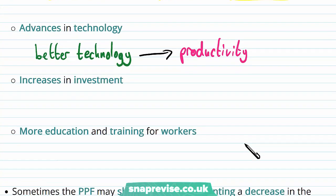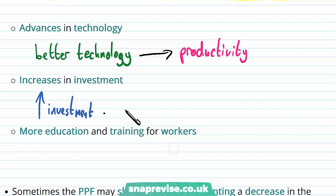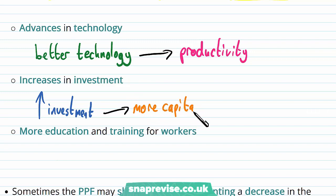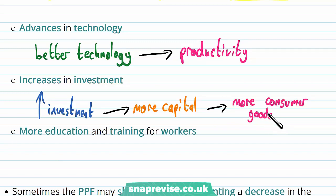Let's think about an increase in investment as a form of shifting the PPF curve. If we increase investment, this will lead to more capital in our economy. When we have more capital, we are able to produce more consumer goods. This is different from our previous example because we are not giving up any consumer goods to gain more capital — instead, investment has led to the production of more capital goods, which gives us more consumer goods in the long run.